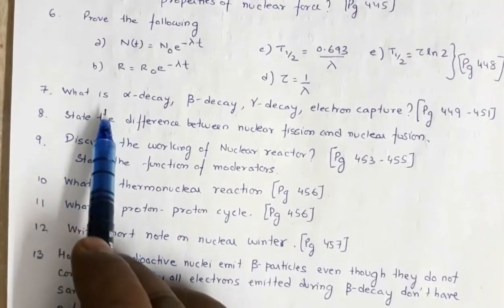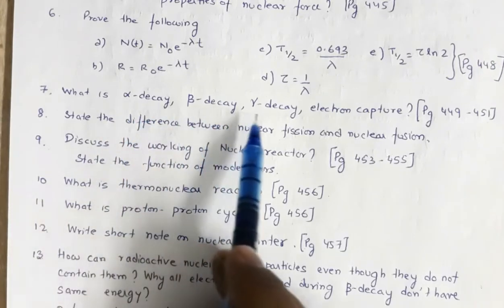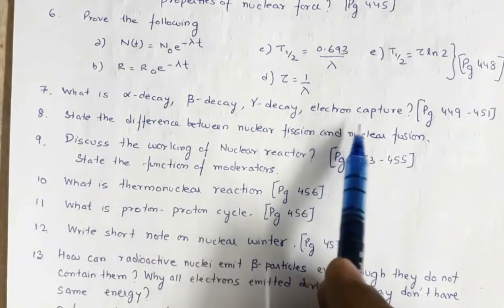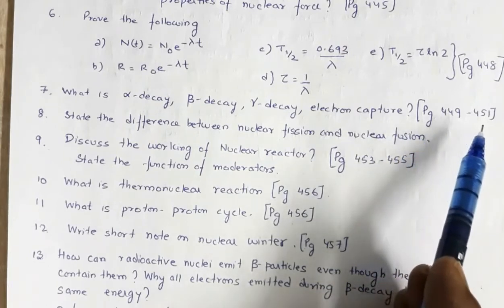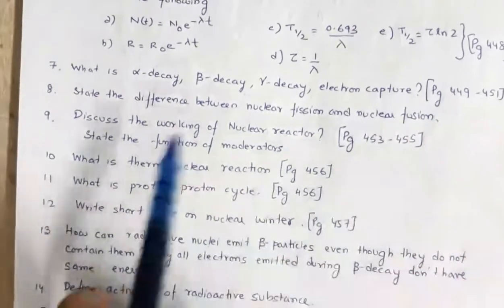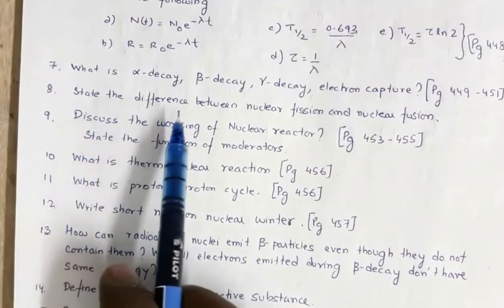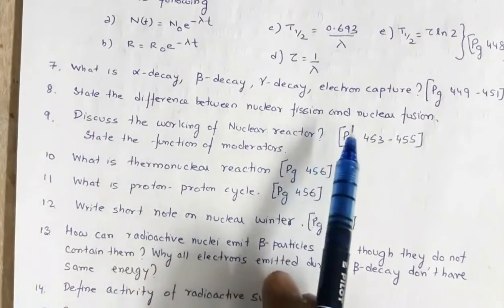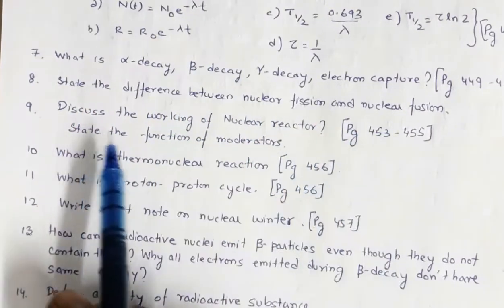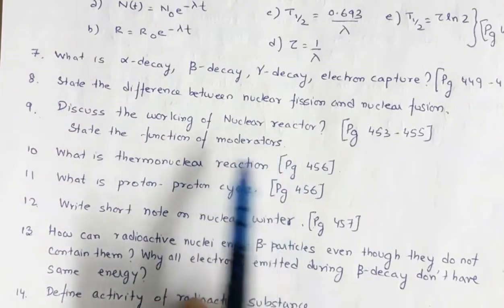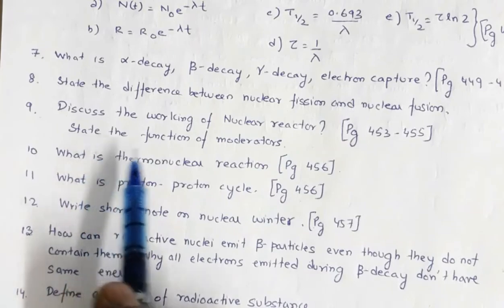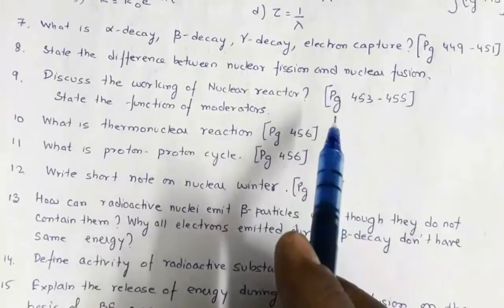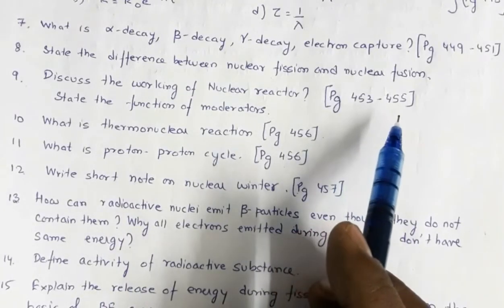Then you have what are alpha decay, beta decay, gamma decay and electron capture. So this is given in page number 449 and 451. Next is state the difference between nuclear fission and nuclear fusion. Discuss the working of nuclear reactor and what are the various components of the nuclear reactor. Then state the function of moderators. So this is given in page number 453 to 455.